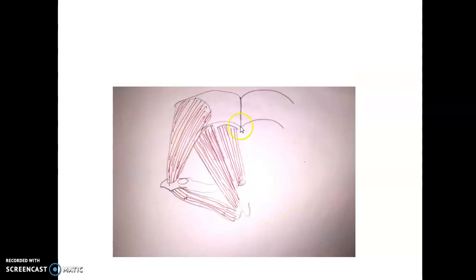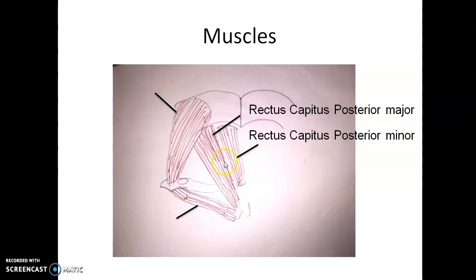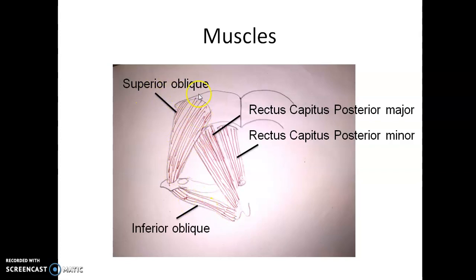Coming to the orientation of the muscles in this area, we can see four muscles. There is a straight muscle going to the skull cap — large and from behind — called rectus capitis posterior major. A similar but smaller muscle is rectus capitis posterior minor. Then there are two oblique muscles: the superior oblique (obliquus capitis superior) and the inferior oblique (obliquus capitis inferior). These four muscles are encountered in this region.